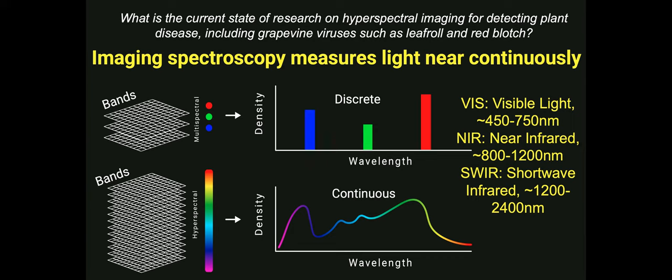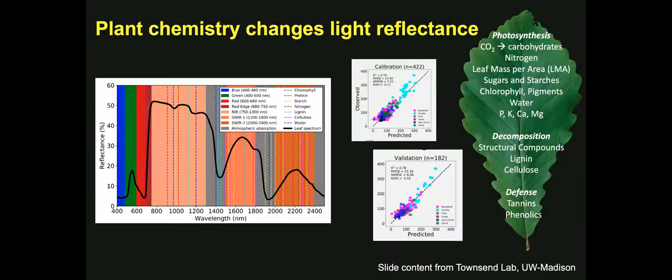SWIR refers to the shortwave infrared region of light. When we reference full spectrum imaging spectroscopy, we're talking about sensors that can measure from the visible range through the shortwave infrared up to about 2400 nanometers. These sensors are incredibly powerful for vegetative spectroscopy and disease detection because they are capable of measuring plant chemistry, as innate plant chemistry and physiology changes light reflectance. There are known spectral regions that correspond to plant constituents — traits ranging from carbohydrates, nitrogen, leaf mass per area, sugars and starches, as well as compounds related to defense and decomposition. Through statistical inference such as partial least squares regression or radiative transfer modeling, we can turn hyperspectral reflectance into highly accurate quantifications of plant chemistry.